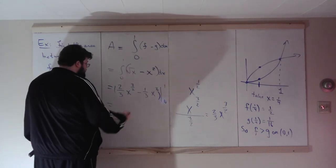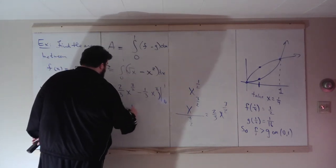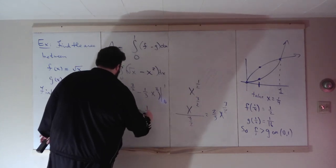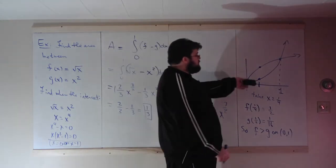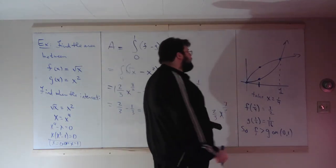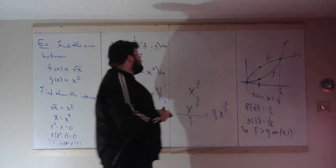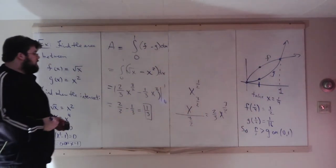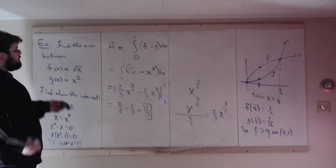At 0 we get 0, so all you have to do is substitute 1. So we get 2 thirds times 1 minus 1 third times 1, which tells us the area is 1 third. And this diagram actually is accurate for these two functions. F would be here, G would be here. So we can use an integral to find areas between curves. That's a very important observation.